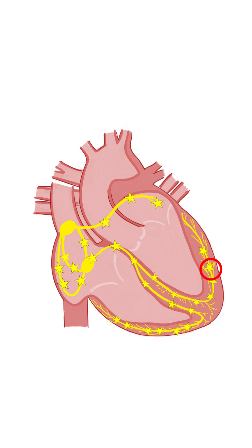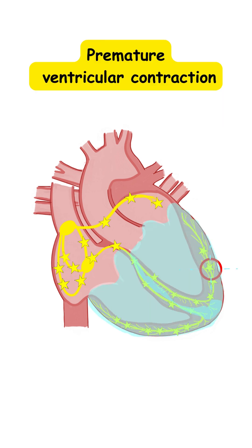When a focus within the ventricles becomes irritable, it generates an impulse that is going to cause a premature ventricular contraction, an extrasystole.